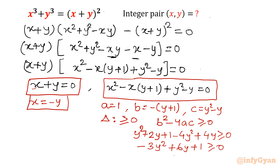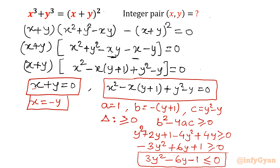Multiplying through by minus 1 reverses the inequality, giving 3y² minus 6y minus 1 less than or equal to 0. This is a quadratic inequality in y, and solving it will give us the range of valid y values — which in turn gives us the number of integer solutions.